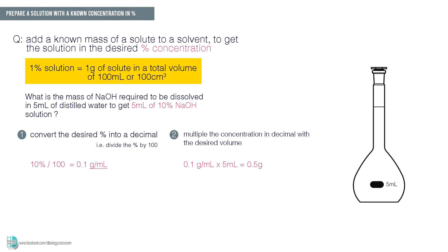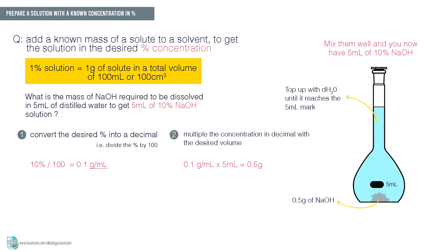So now you know that you need to prepare 0.5 gram of sodium hydroxide in a beaker or volumetric flask. Then top up the container with distilled water until it reaches 5 ml. After you mix them well, you will now get 5 ml of 10% sodium hydroxide solution.